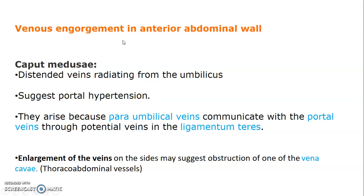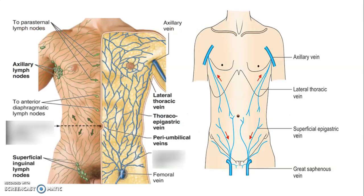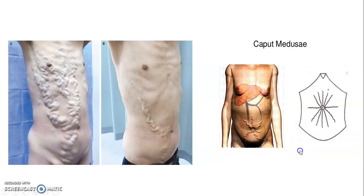We have venous engorgements of the anterior abdominal wall. Caput medusae are engorged para-umbilical vessels mainly seen in portal hypertension due to portal vein communication in the ligamentum teres. We also have enlargement of veins when either the superior or inferior vena cava is obstructed — you get thoracoepigastric vessels formed by communication between the lateral thoracic vein (a tributary of the axillary vein) and the superficial epigastric vein (a tributary of the great saphenous vein). The diagrams show a patient with engorged thoracoepigastric vessels and caput medusae with prominent para-umbilical veins.